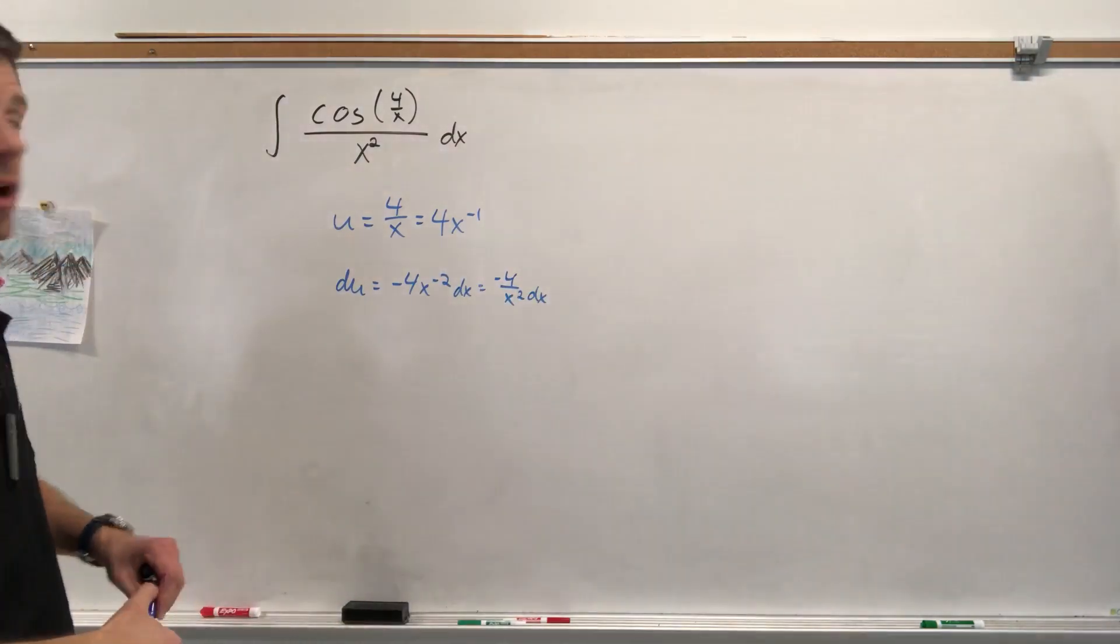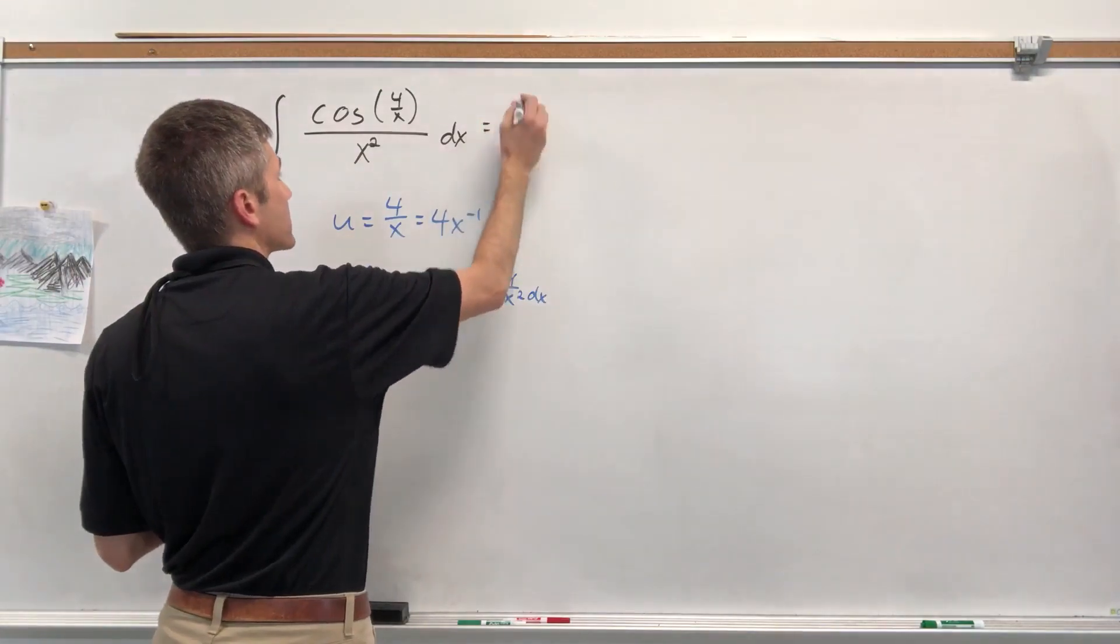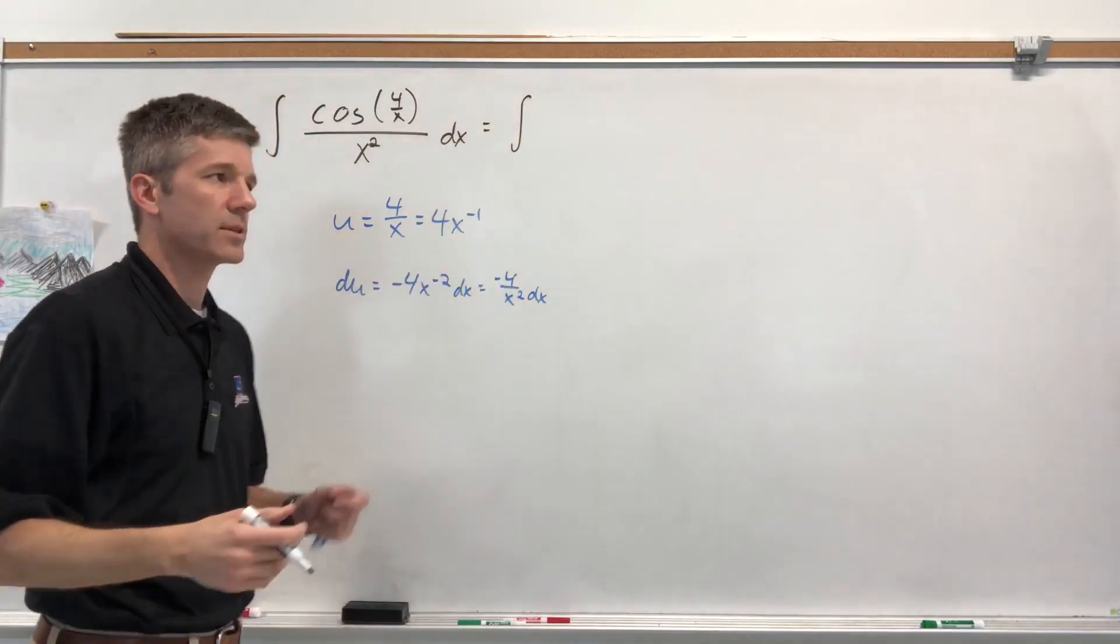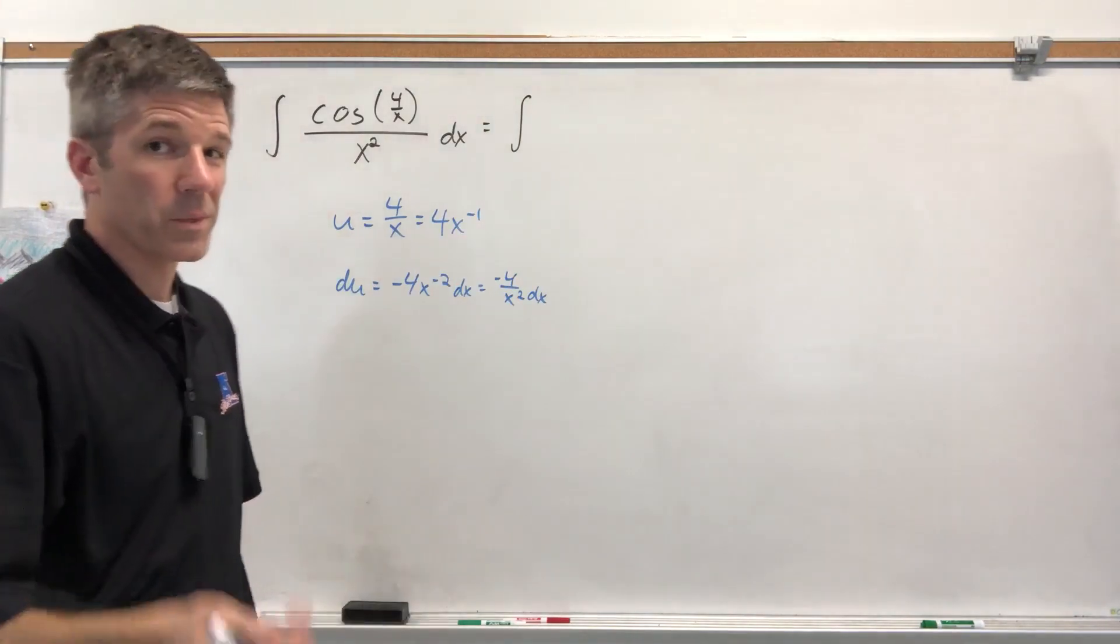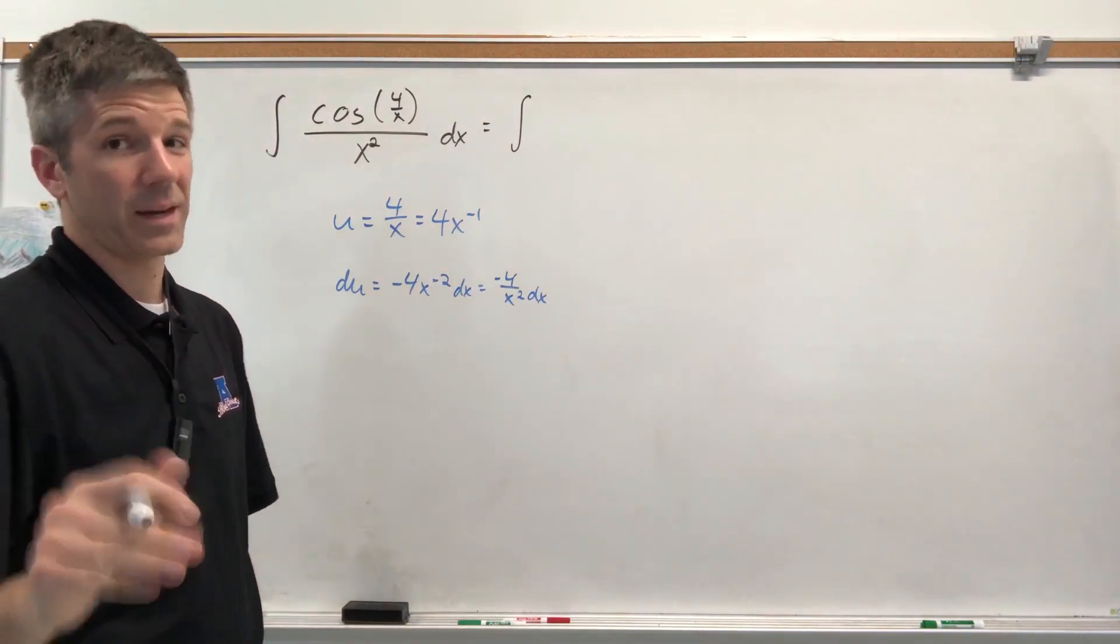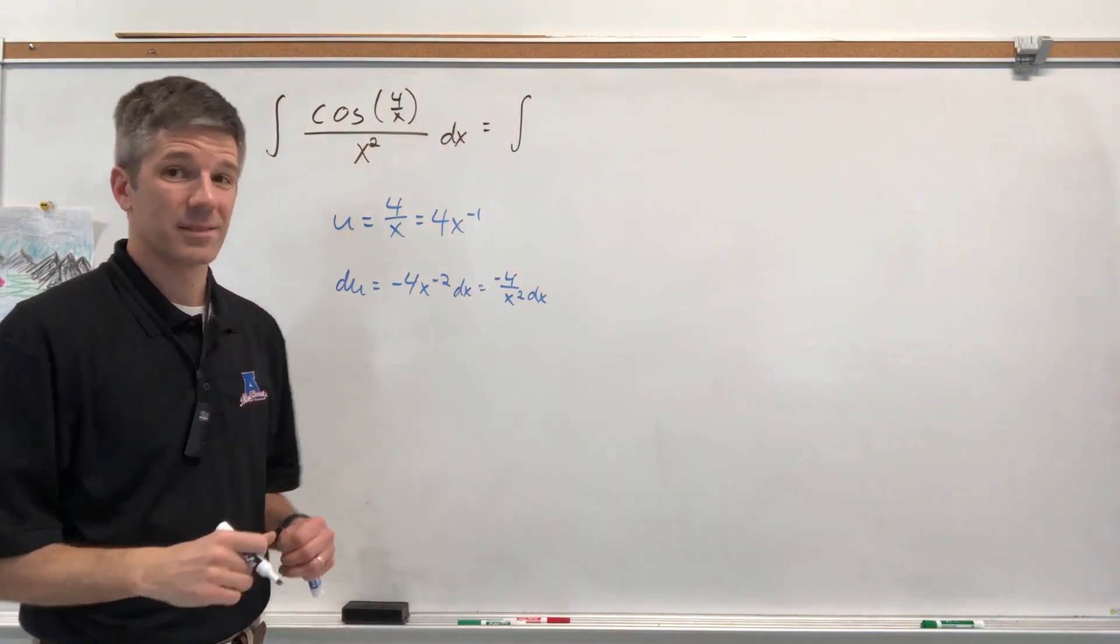which is negative 4 over X squared DX. Okay. Let's start identifying parts, and you're going to see where this one's going pretty quickly. The biggest thing happening is that somebody got cosined, and if you want to say, oh, somebody got cosined and then divided by X squared, yeah, say that. But the biggest thing is that somebody got cosined. That dividing by X squared, it's about to go away. Watch this.